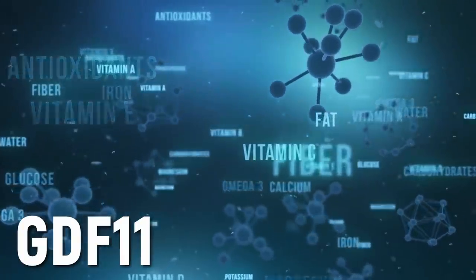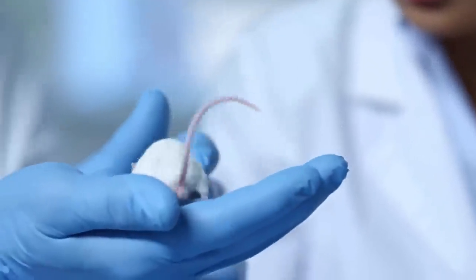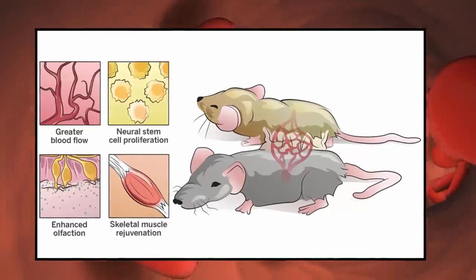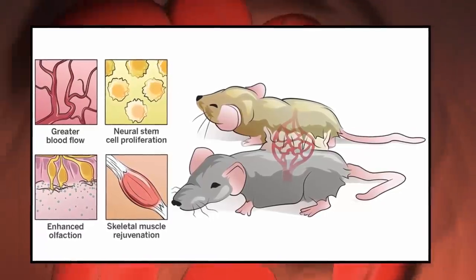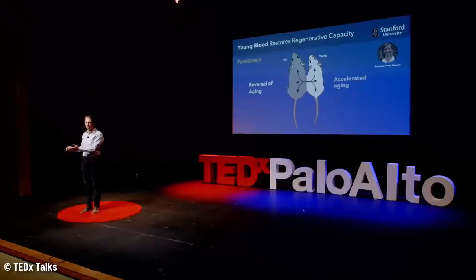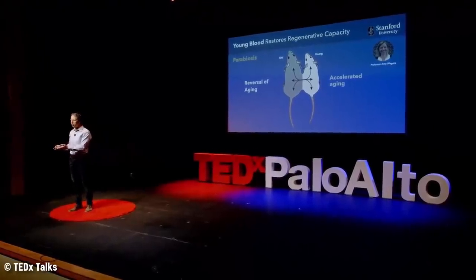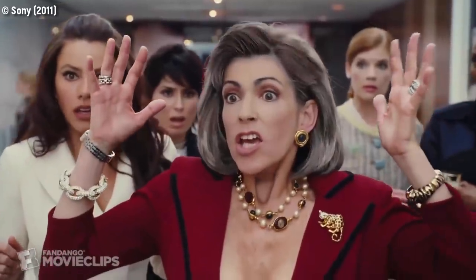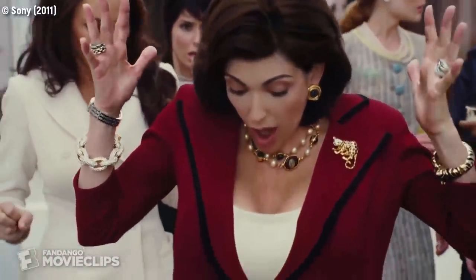Scientists have observed that a protein called GDF11 is very common in the blood of young mice but scarce in older mice. This protein has been shown to increase skeletal muscle and increase heart strength. If it can be replicated and combined with our growing knowledge of synthesizing blood, regenerative blood transfusions could become commonplace in the not-so-distant future.